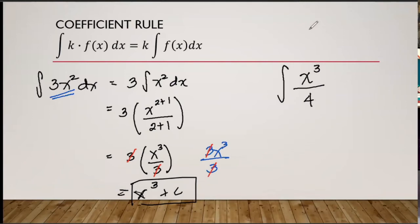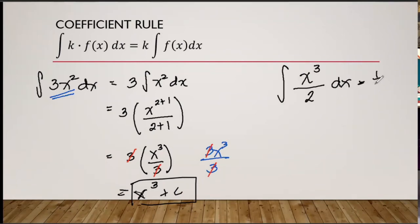Let's find the integral of x cubed over 2 dx. What is the numerical coefficient we need to separate here? You have a 2 in the denominator, so that tells you the numerical coefficient is a fraction — it is 1/2. Separate it first to make things easier. So we now have 1/2 times the integral of x cubed dx, which is simpler to work with.